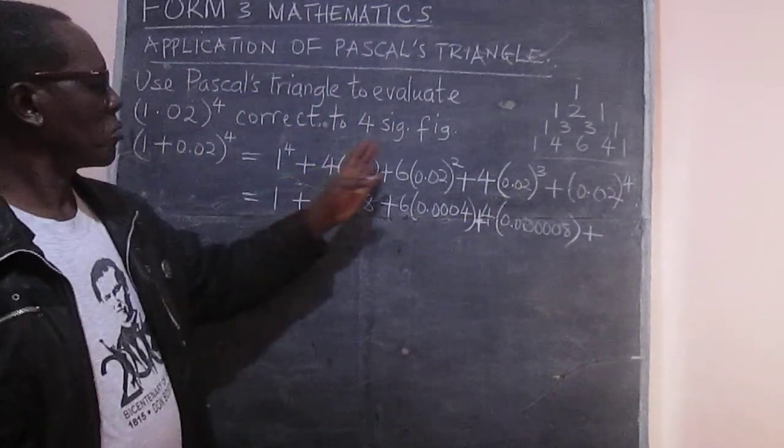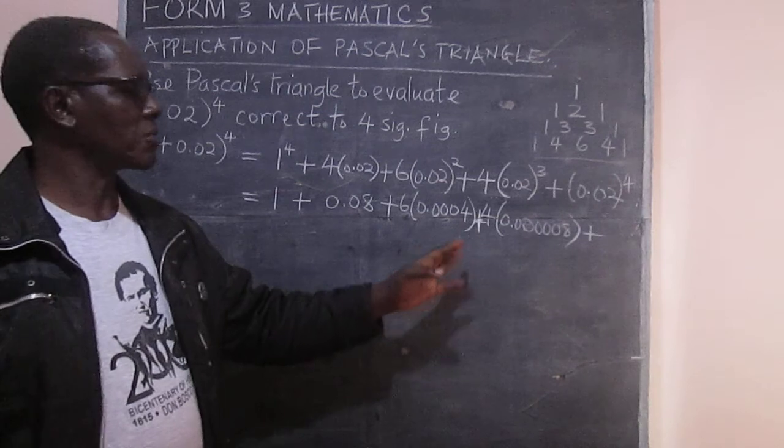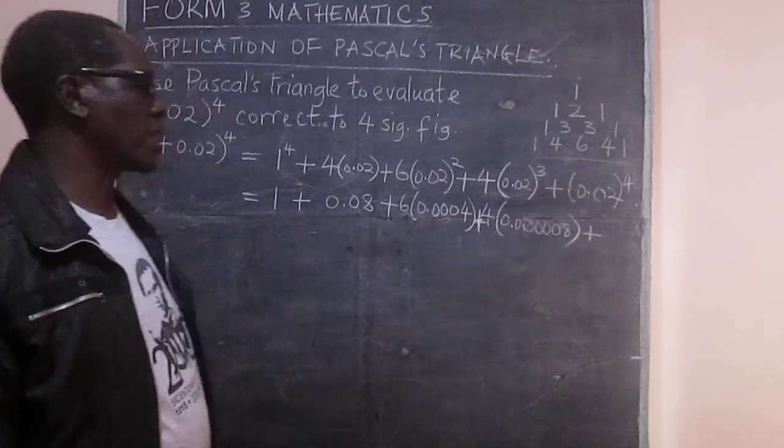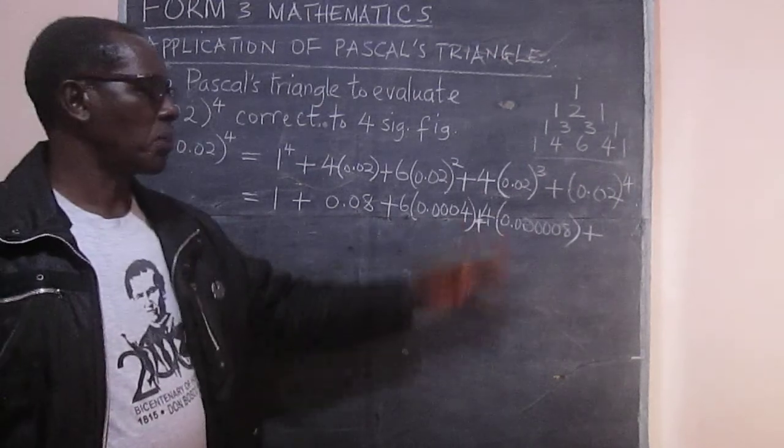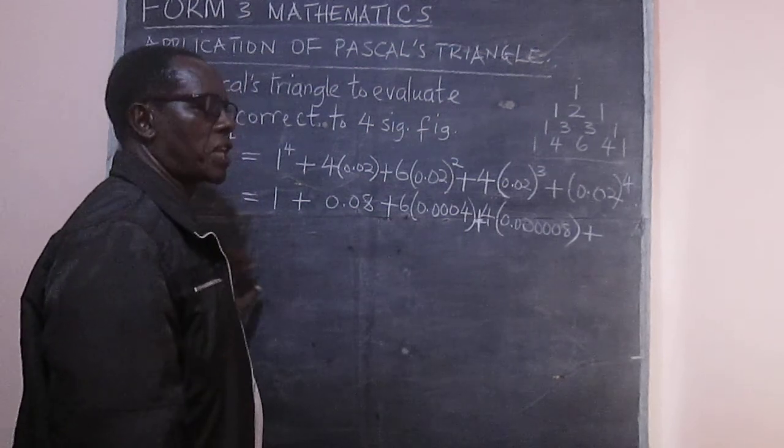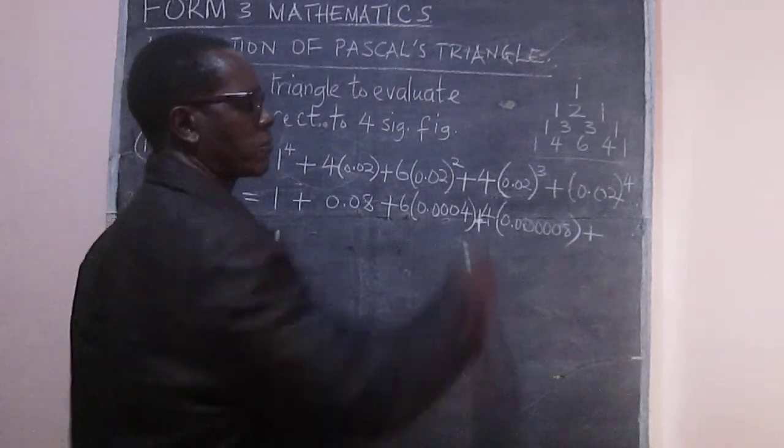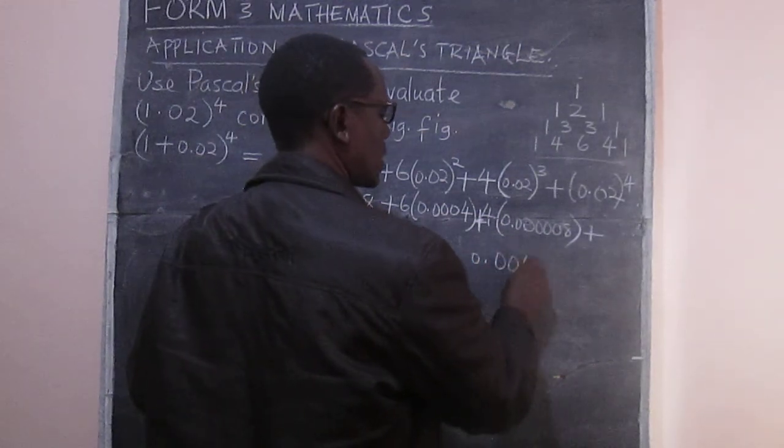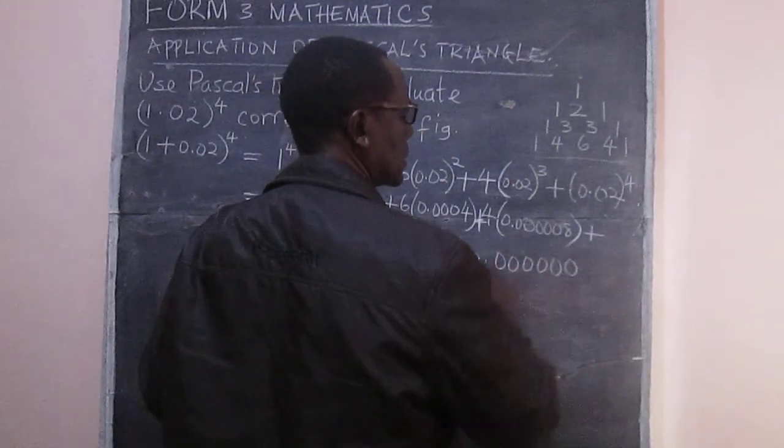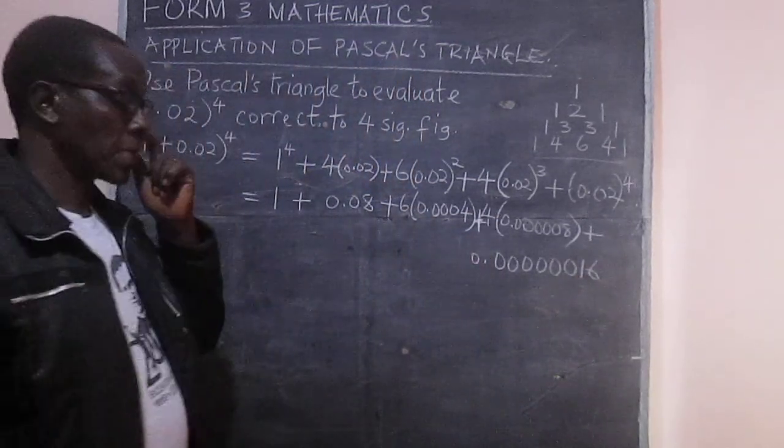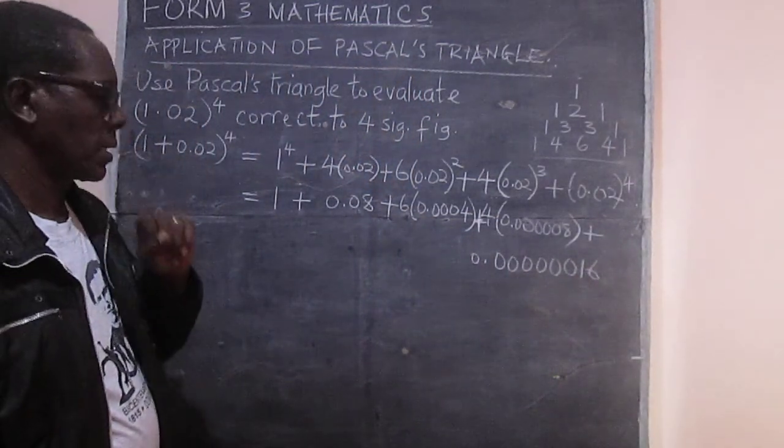But you remember that we are told up to 4 significant figures, so it might not be necessary even to go to all those other decimal places. But let's work out this one. 0.02 raised to 4 is 16, and that's going to be 0.00000016. So we have 8 decimal places.